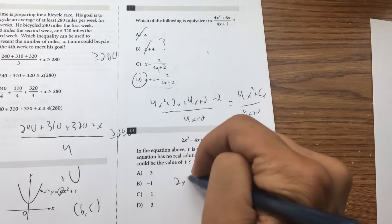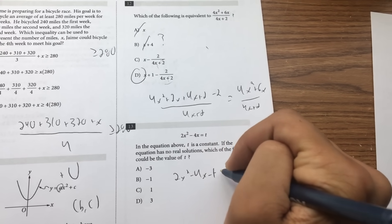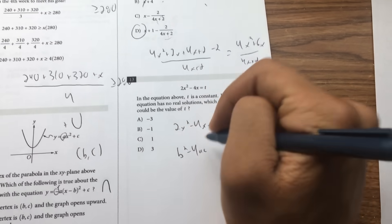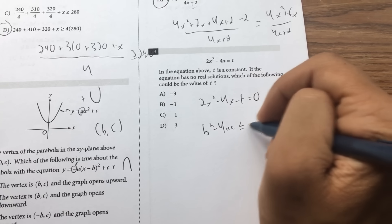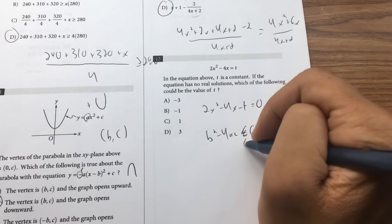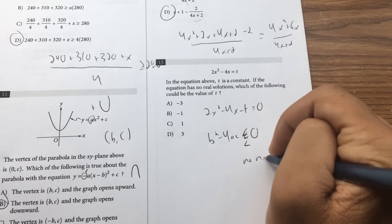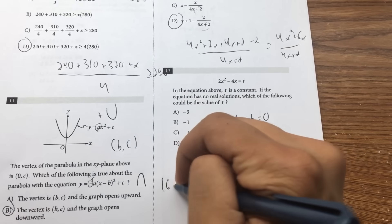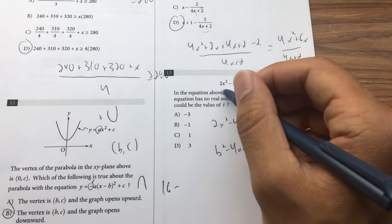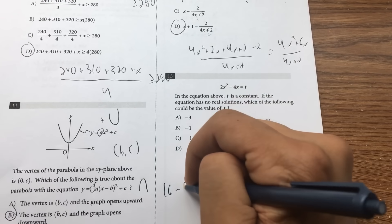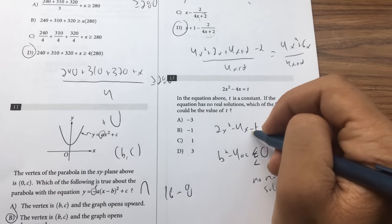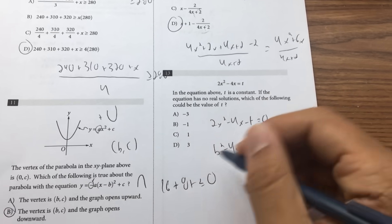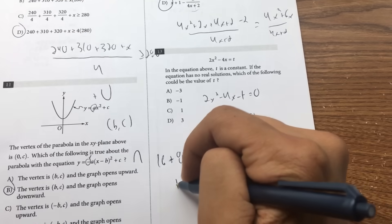If you write this as 2x squared minus 4x minus t equals 0, to find how many real solutions there are, you use the discriminant. If it's less than zero, no real solutions. So let's try that out. b squared, so it's 16 minus 4a, which would be a is 2, that's minus 8, and c is negative t, so that's actually plus 8t, is less than or equal to 0. Subtract 16 both sides.